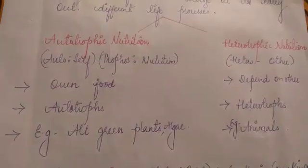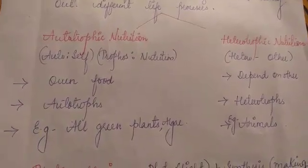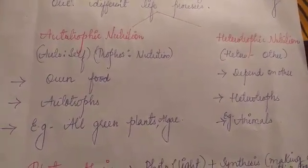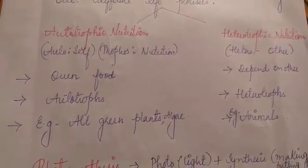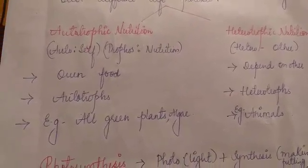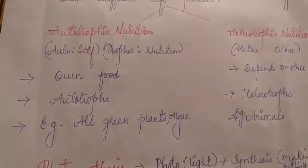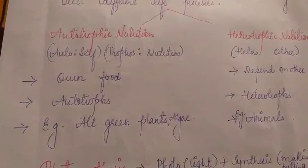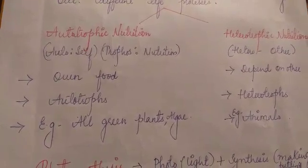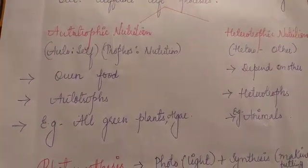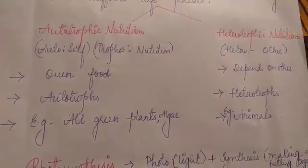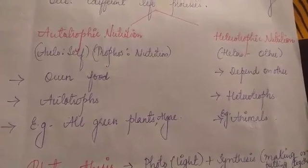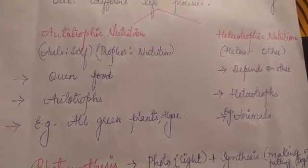There are two modes of nutrition. The first one is autotrophic and the second one is heterotrophic. Auto means self and tropos means nutrition. Likewise, hetero means other and tropos means nutrition.